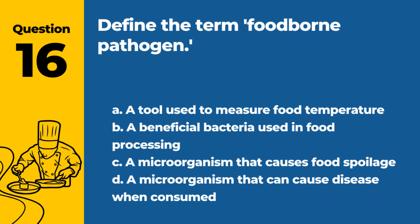Question 16. Define the term foodborne pathogen. A. A tool used to measure food temperature. B. A beneficial bacteria used in food processing. C. A microorganism that causes food spoilage. D. A microorganism that can cause disease when consumed. Answer: D. A microorganism that can cause disease when consumed. A foodborne pathogen is a microorganism that can cause disease when consumed.